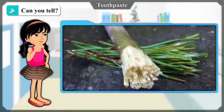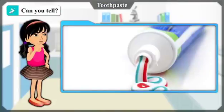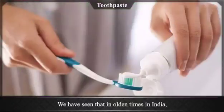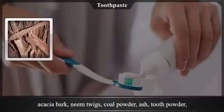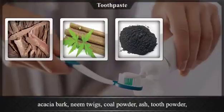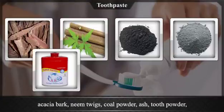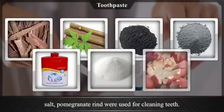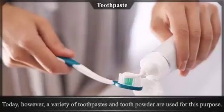Can you tell? Which substances were used earlier for cleaning teeth? What do we use today to clean our teeth? In olden times in India, acacia bark, neem twigs, coal powder, ash, tooth powder, salt, and pomegranate rind were used for cleaning teeth.